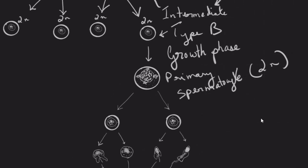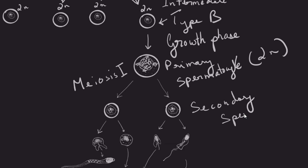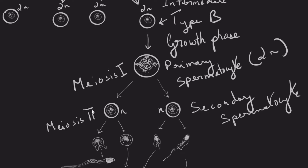The primary spermatocyte will then divide by meiosis twice. First, by meiosis I — the first meiotic division — to form the secondary spermatocytes, which are now haploid, meaning the chromosome number has been reduced by half. The secondary spermatocytes will then divide again by the second meiotic division to form the spermatids.